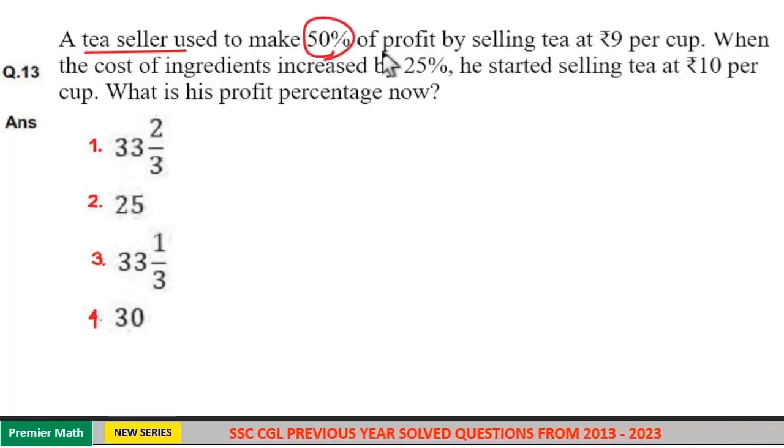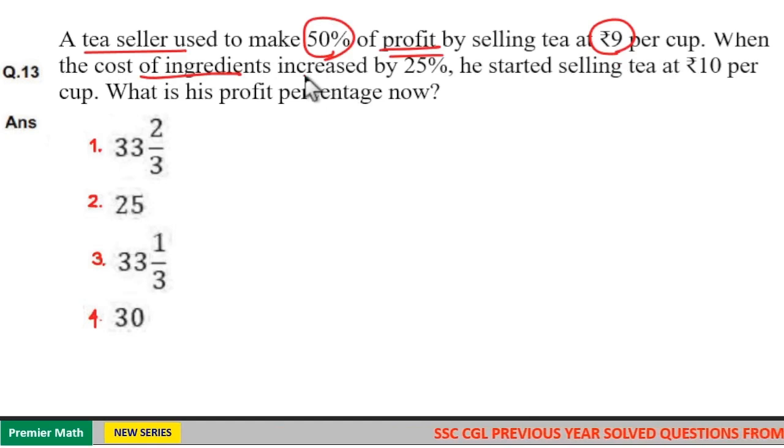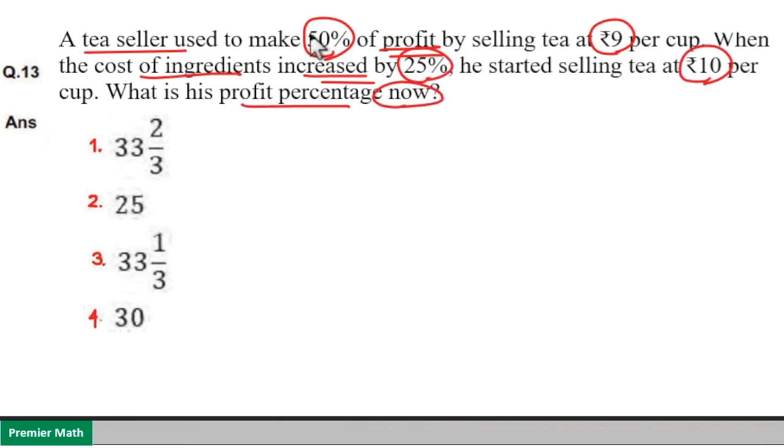A tea seller used to make 50 percent profit by selling tea at 9 rupees per cup. When the cost of ingredients increased by 25 percent, he started selling tea at 10 rupees per cup. What is his profit percentage now?